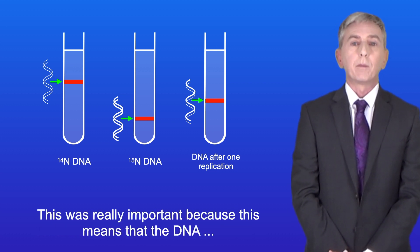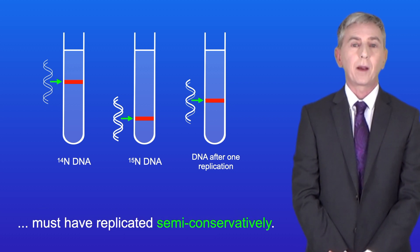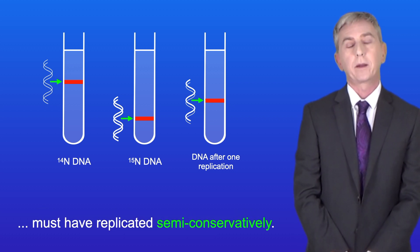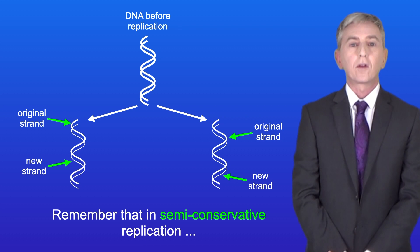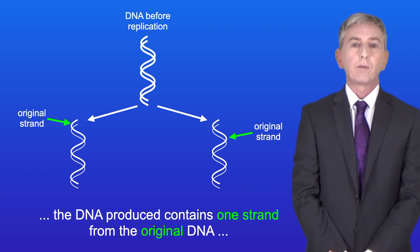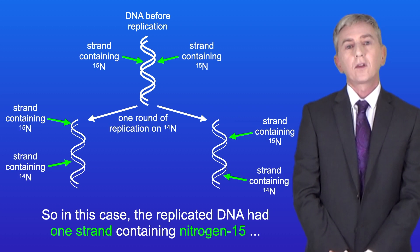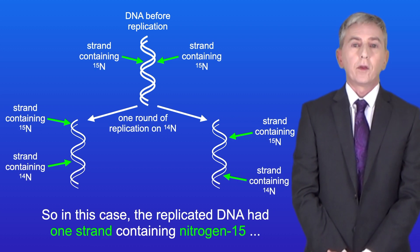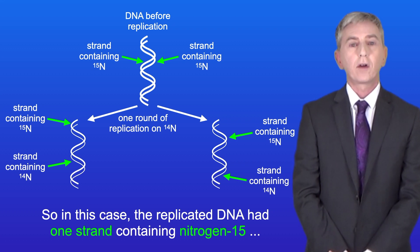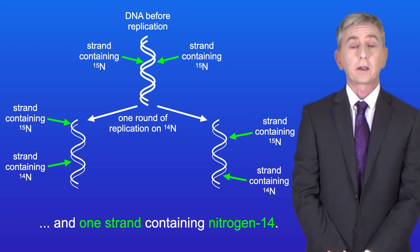This was really important because it means the DNA must have replicated semi-conservatively. Remember that in semi-conservative replication, the DNA produced contains one strand from the original DNA plus one completely new strand. So in this case, the replicated DNA had one strand containing nitrogen-15 and one strand containing nitrogen-14, perfectly matching the intermediate band result.